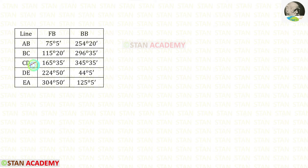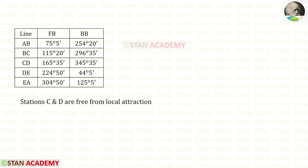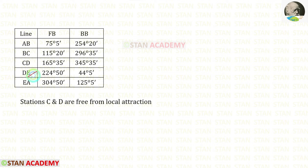Now let us take the line CD. You can see that both of these two minutes are the same, so there is a possibility the difference can be 180 degrees: 345 degrees 35 minutes minus 165 degrees 35 minutes — we will get exactly 180 degrees. Since the difference of these two is 180 degrees, the stations C and D are free from local attraction. Let us take line DE — you can see the minutes are both different, so the difference will not be equal to 180 degrees.